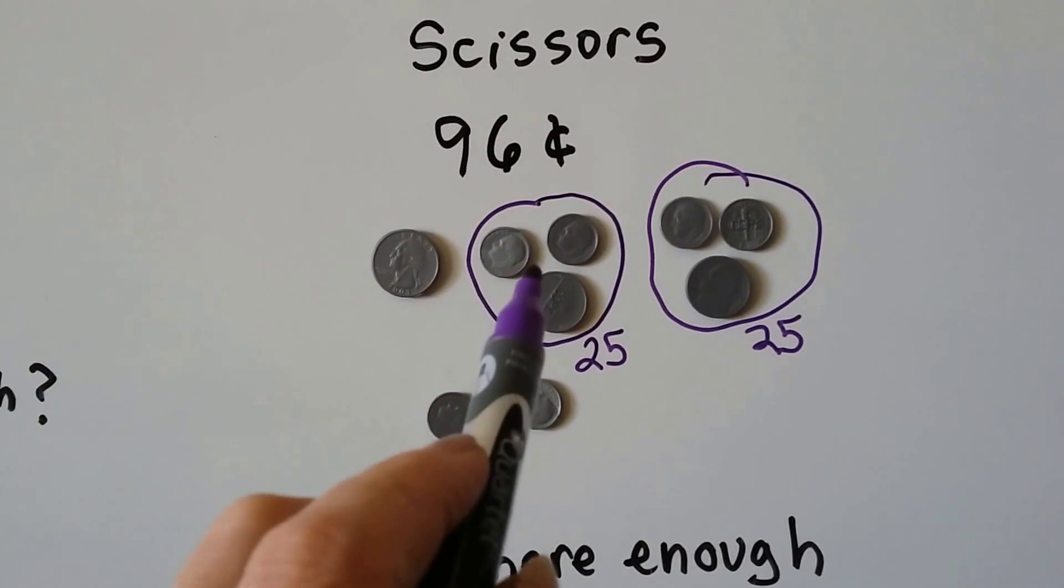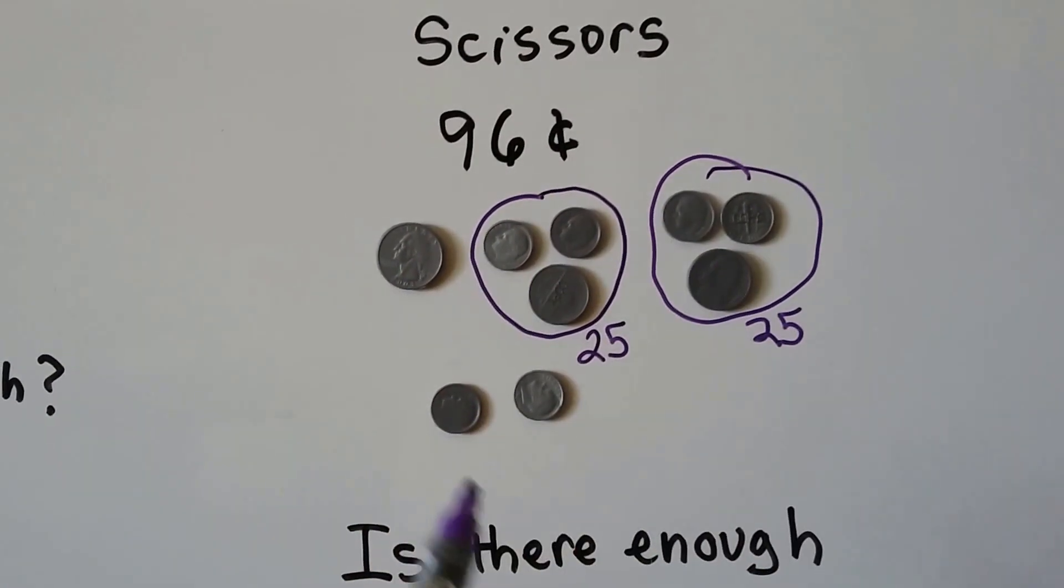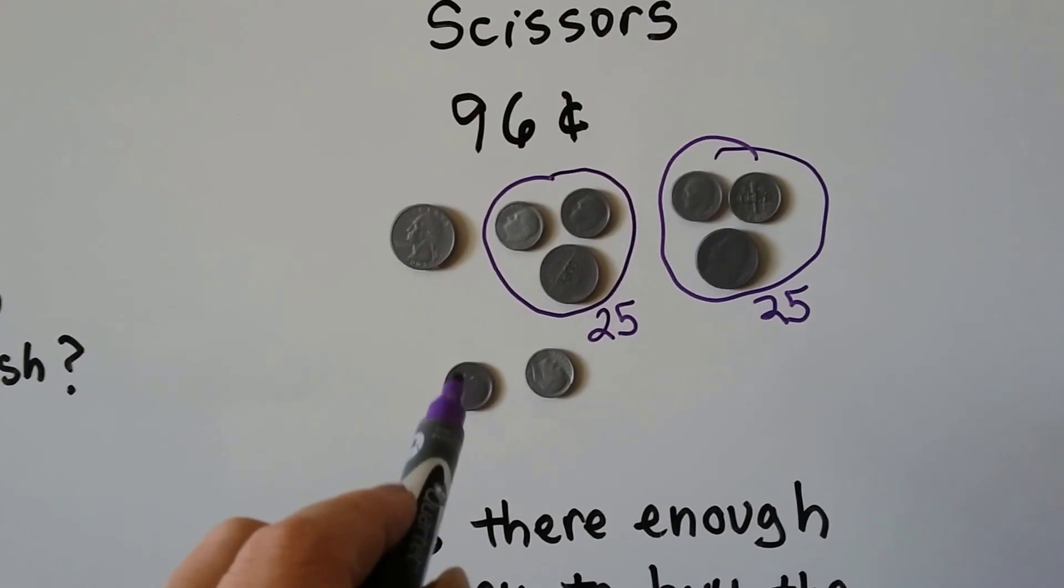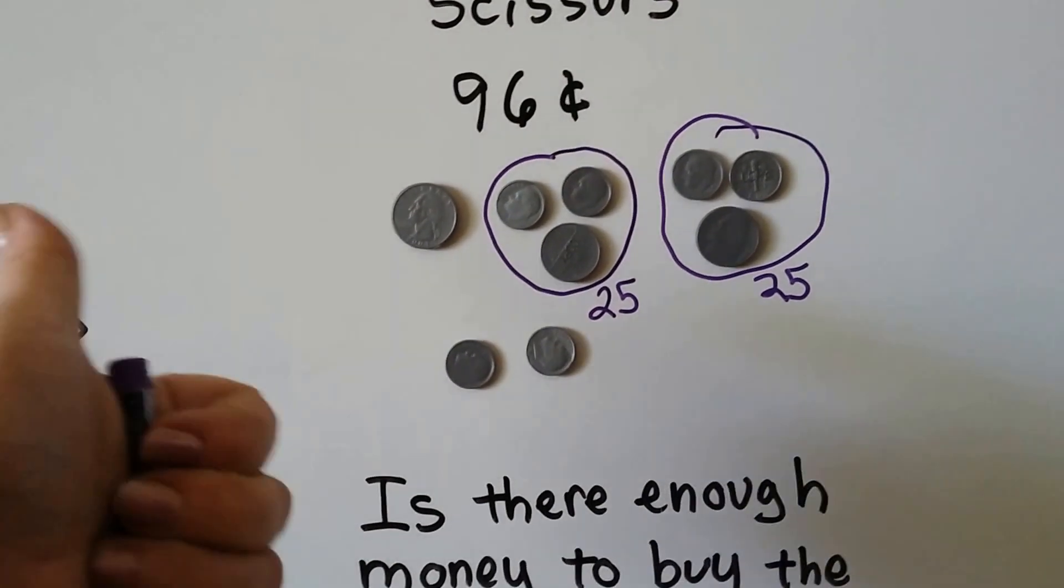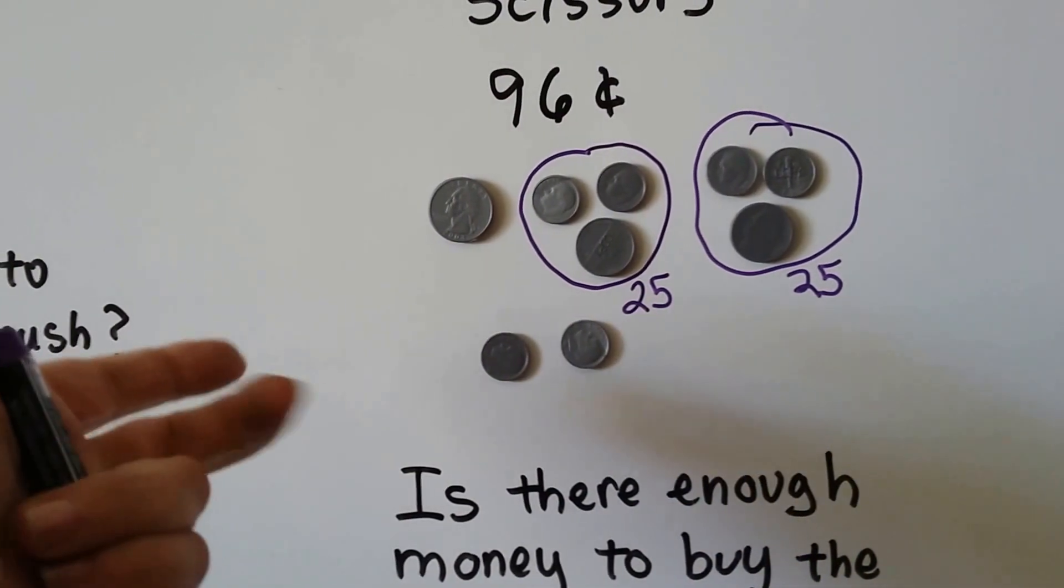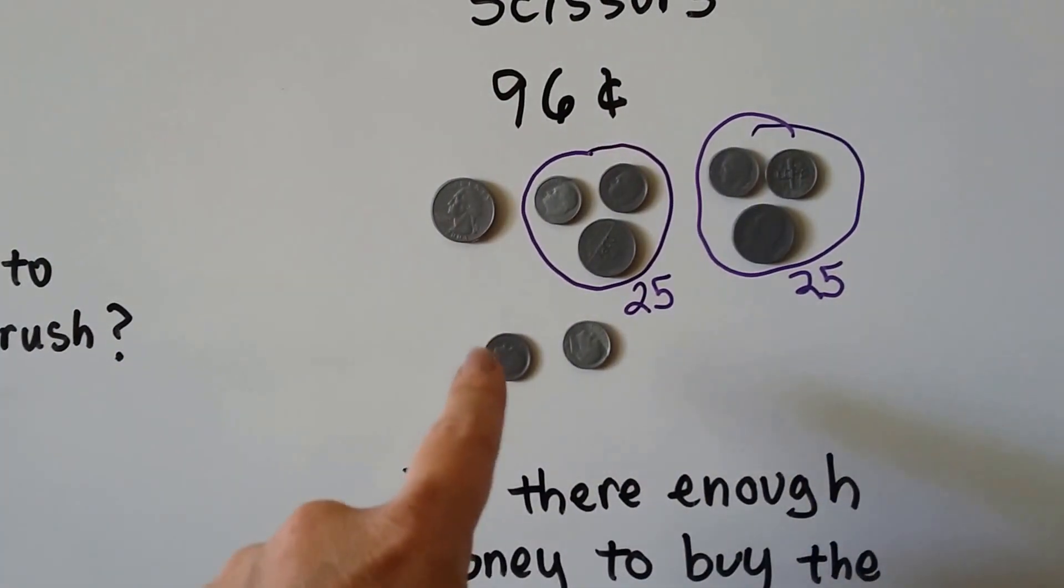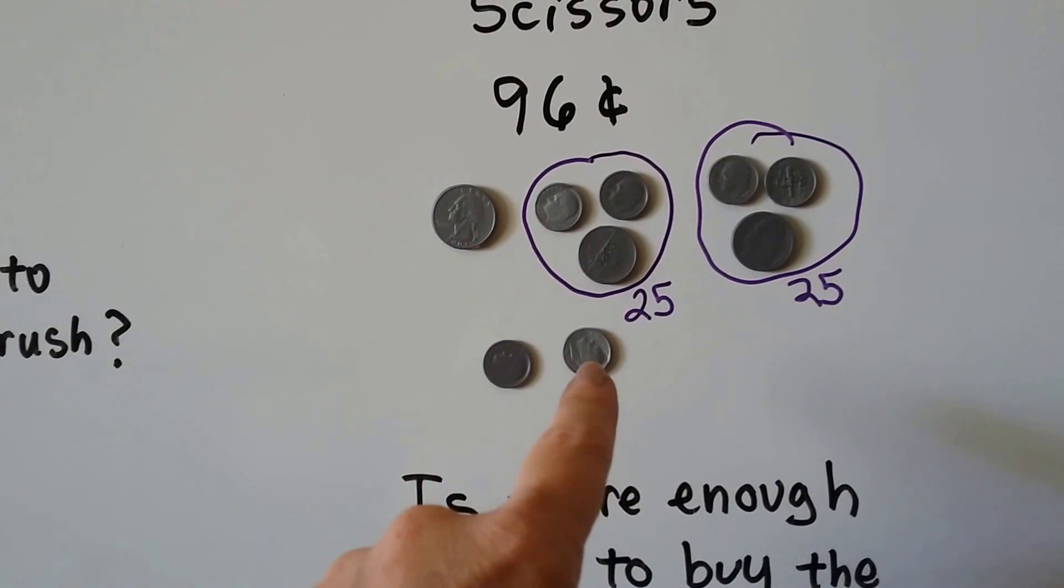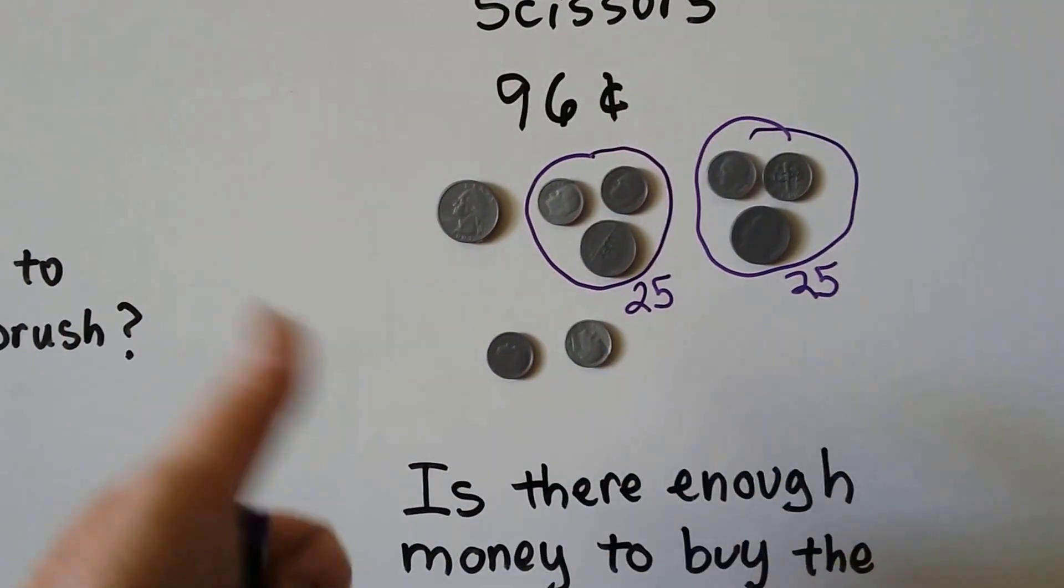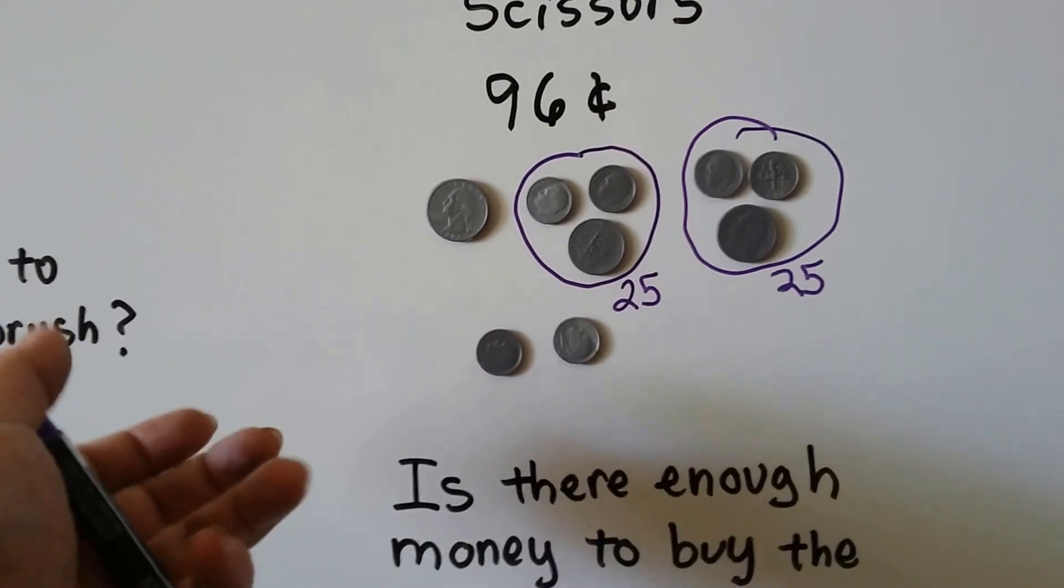Remember? 25, 50, 75. Now we have two dimes. We're at 75 and we have to add 10. 76, 77, 78, 79, 80, 81, 82, 83, 84, 85. So that's 85. And 10 more is 86, 87, 88, 89, 90, 91, 92, 93, 94, 95.